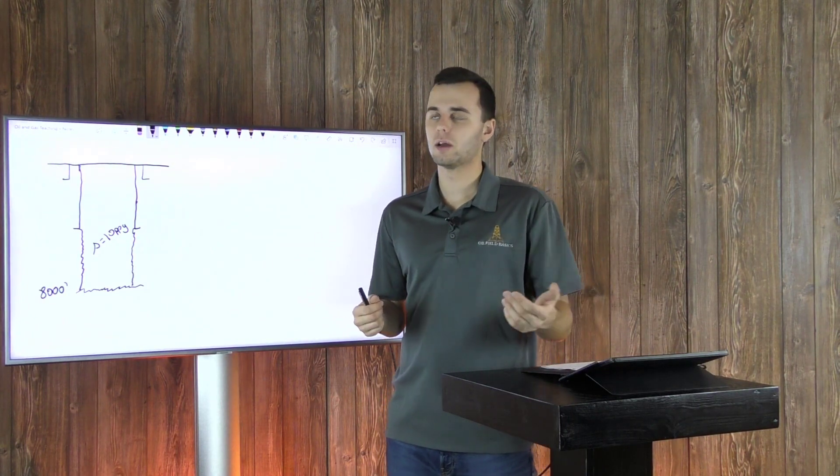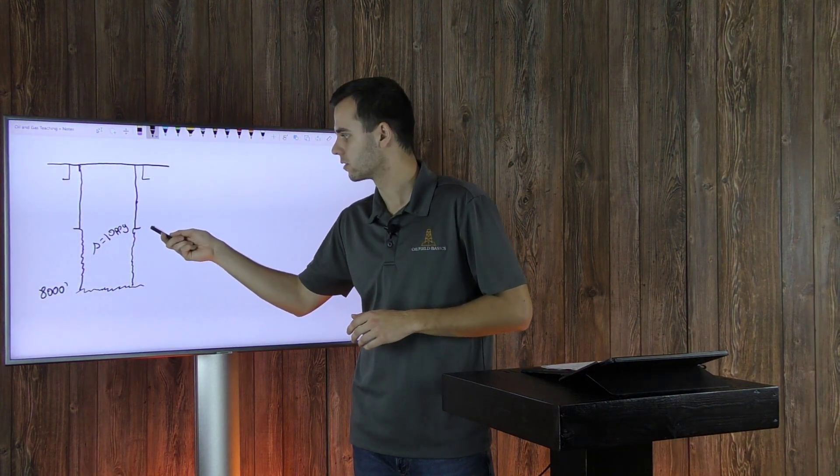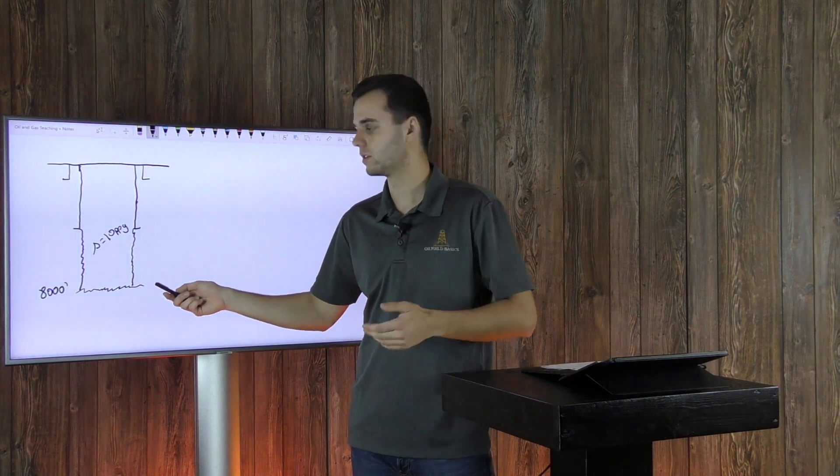Here I have a typical wellbore diagram that you see being drawn. I have your surface up here, your conductor casing, your surface casing, and we're drilling ahead at 8,000 feet with your intermediate casing.